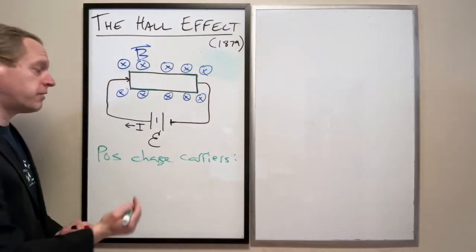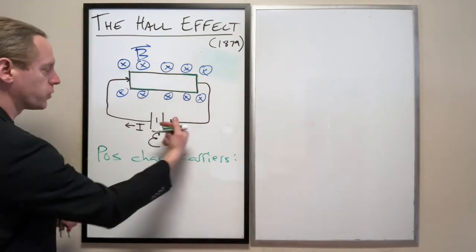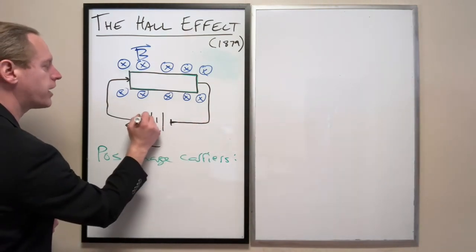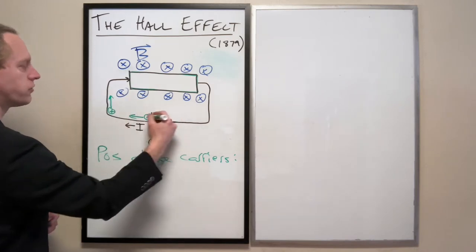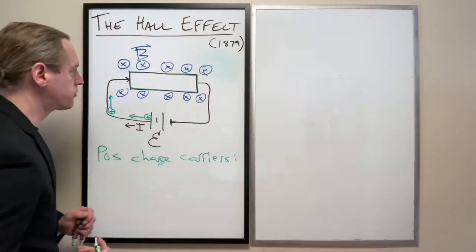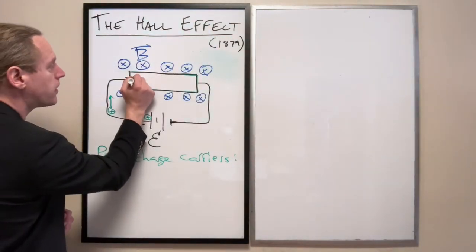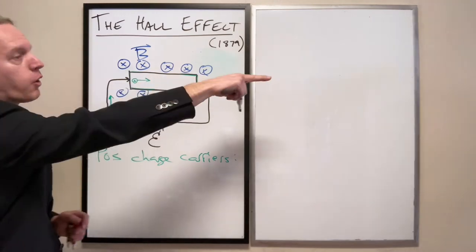So if we have positive charge carriers, in other words, if we view these as little positive guys coming out and positive particles running through the wire in the clockwise direction, these positive particles, as they move forward with a velocity V, now you see where this is going here.